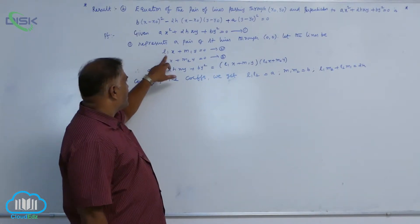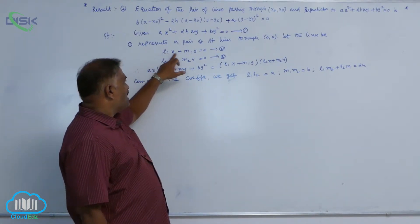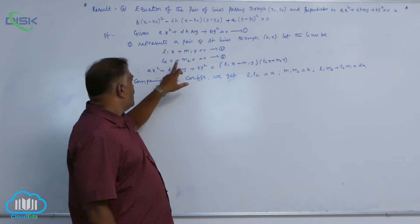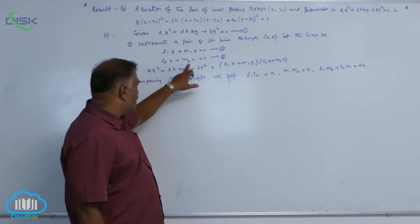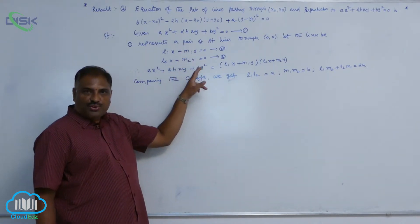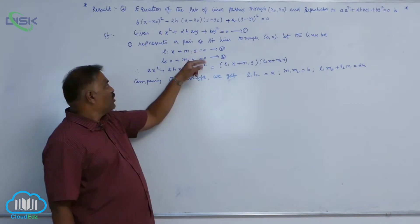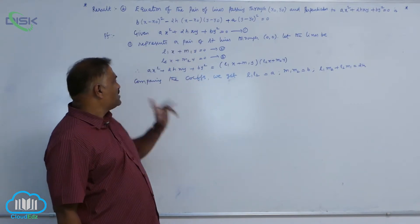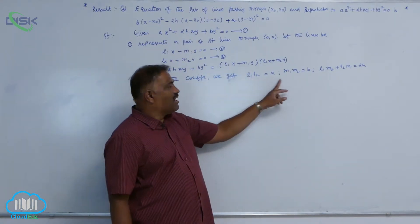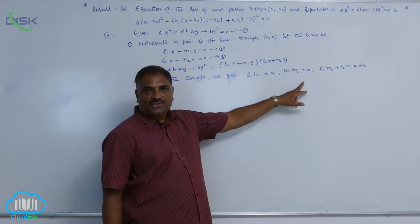Let the lines be l₁x + m₁y = 0 and l₂x + m₂y = 0. If you multiply these two equations, you get the original equation. So we multiply and compare the coefficients.